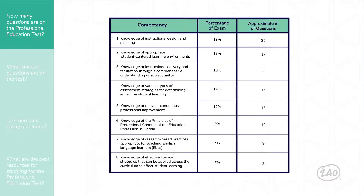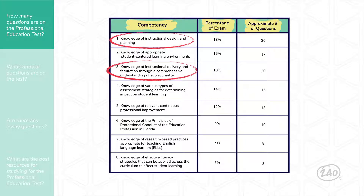This table shows you the competencies of the exam as well as the percentages and the approximate number of items for each. As you can see, the first and third competencies contain the highest number of test items. You should definitely keep this in mind as you prepare a plan to study.